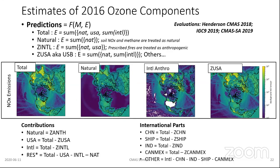We can take all those different forward models and estimate contributions using the equations below. Natural is simply the zero-anthropogenic forward run. The USA contribution is the total run minus the zero-USA. The international is the total minus the zero-international. When we do that, we end up with a non-linear system producing results that don't perfectly add up to the total — that's where the residual term comes from.